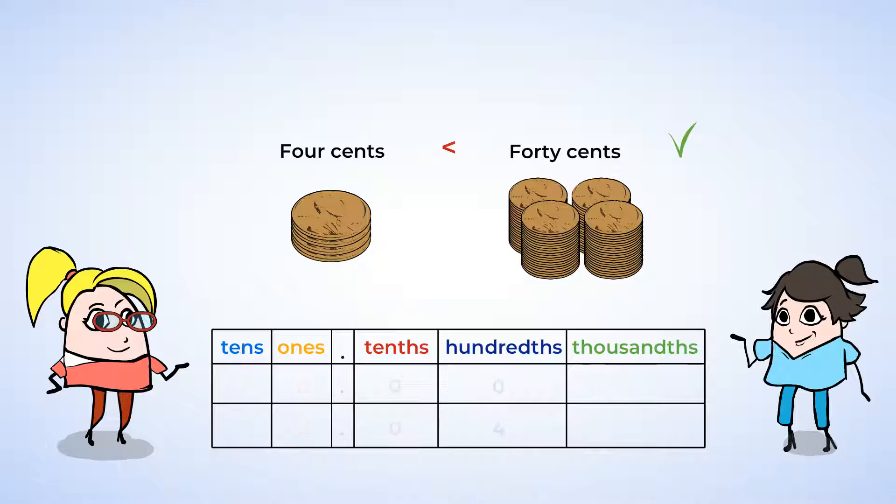And this means that if a four is in the thousandths place, it's even smaller than it would be in the hundredths place. The more pieces a whole is broken up into, the smaller the pieces. So Mia is right. Four hundredths is actually greater than four thousandths. Great job helping Mia and Jenny. Now let's practice comparing and ordering more decimals.